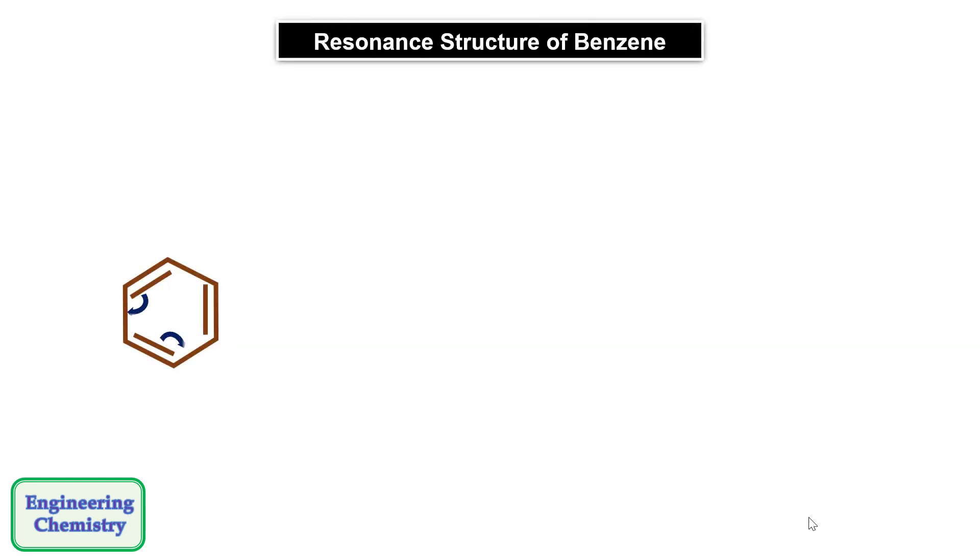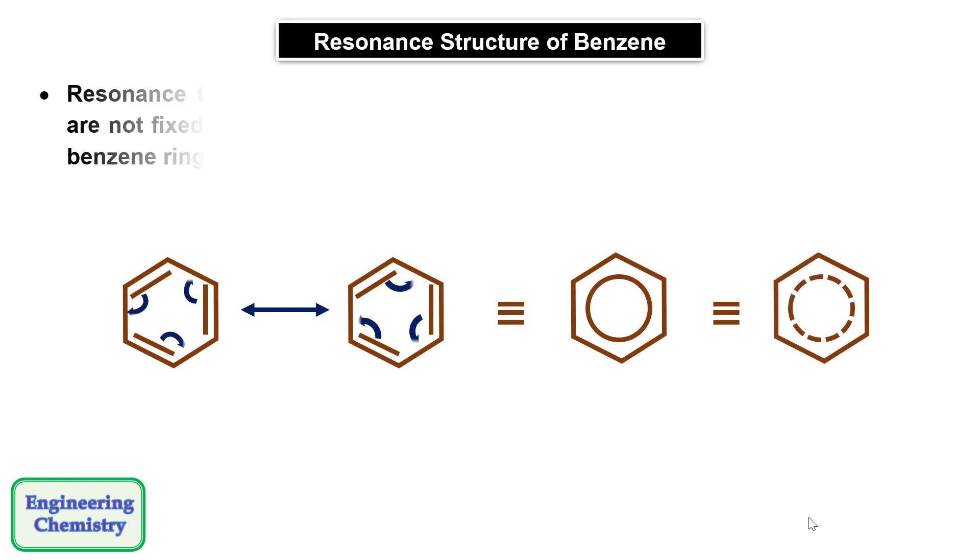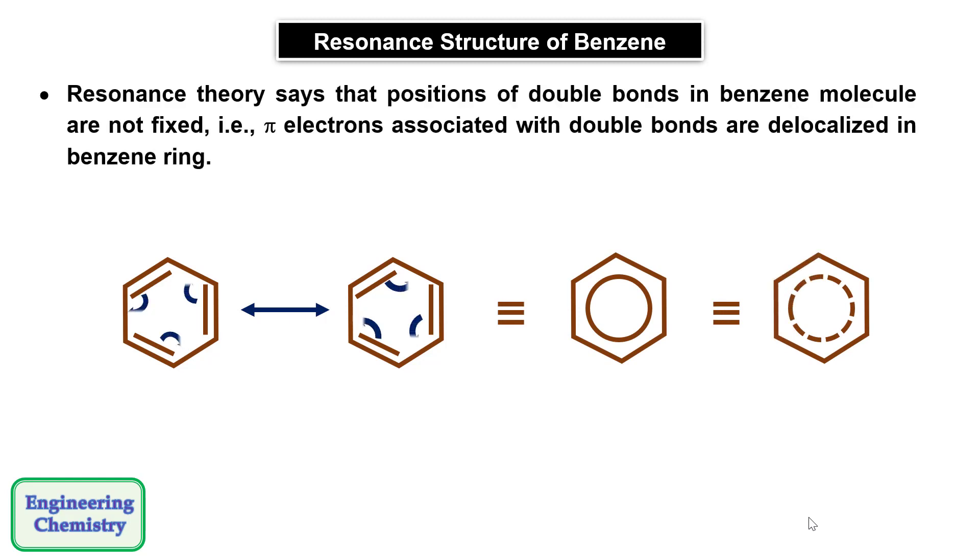Let's understand the resonance structure of benzene. In benzene molecule we can see that all the pi electrons are delocalized over the entire structure. Resonance theory says that the position of the double bonds in benzene molecule are not fixed. That is, the pi electrons associated with the double bonds are delocalized in the benzene ring.